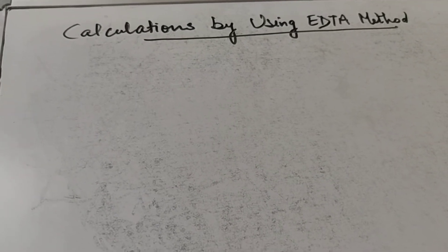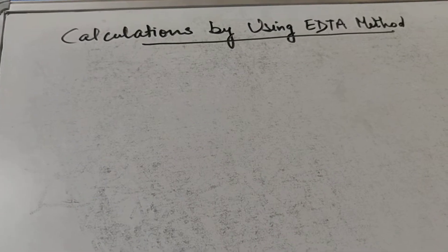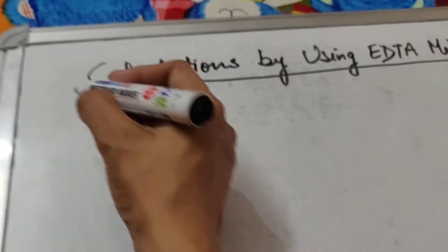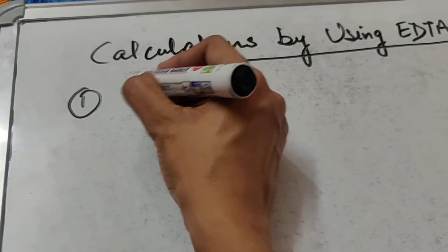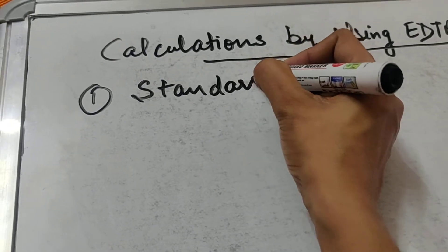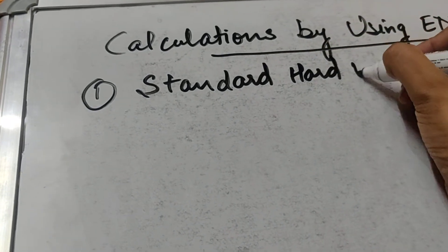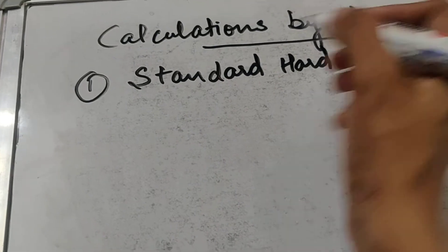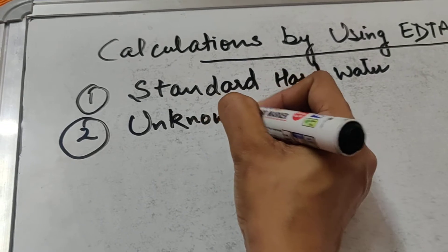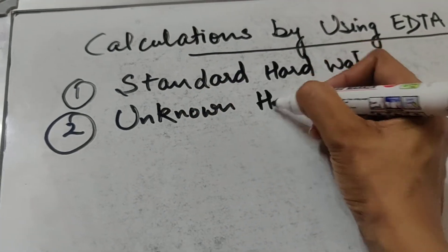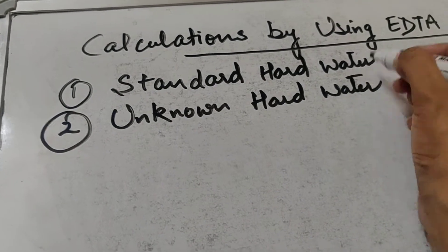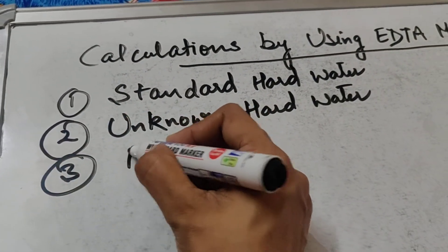In yesterday's procedure we took 20 ml of water sample. In the lab, when you perform this experiment, you take water samples in three steps. In the first step, the water sample is standard hard water. In the second step, the water sample is unknown hard water — the hardness of which has to be determined. In the third step, it is boiled water.